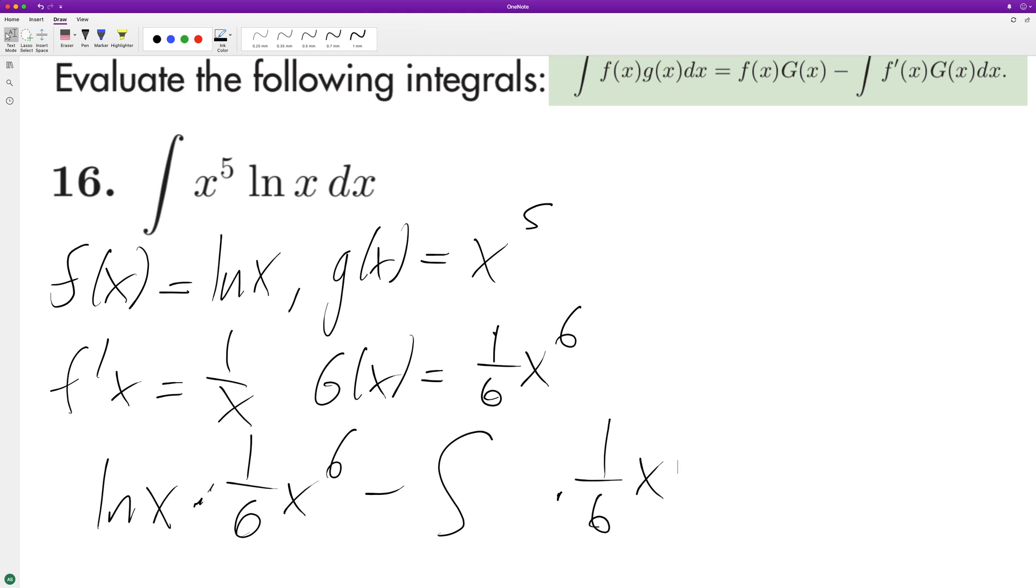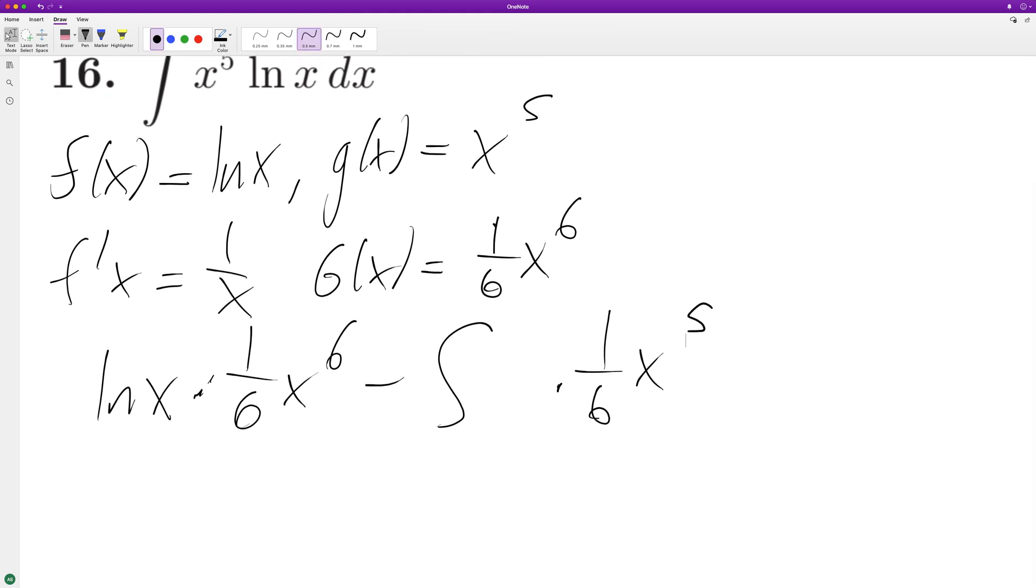So when we integrate this, looks like we have 1 over 36. So this is going to be 1/6 x raised to the 6 natural log of x, minus raise the exponent by 1, so this becomes 1 over 36 x raised to the sixth.